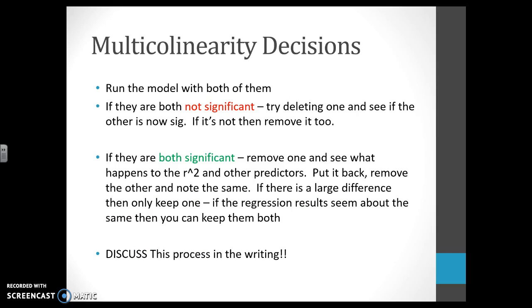If we have multi-collinearity, we have two predictors that are highly correlated to each other. We can run the model to start with both of them. If they are both not significant, then delete one and leave one of them in. If it is also not significant, then remove them both and you're done. But we want to try with both of them because it's possible that the interaction between those two predictors is making them both be not significant. It is very possible that deleting one of them could make the other one significant.